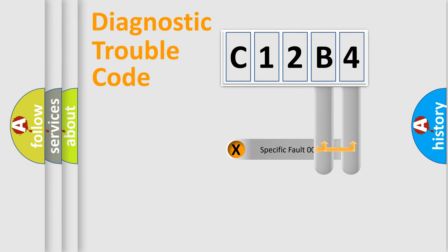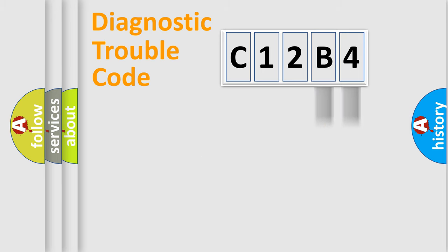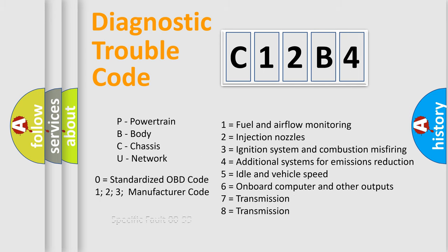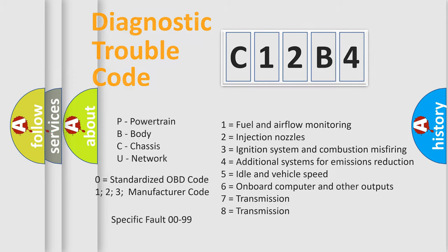Only the last two characters define the specific fault of the group. Let's not forget that such a division is valid only if the second character code is expressed by the number zero.